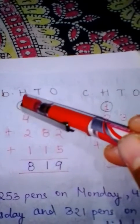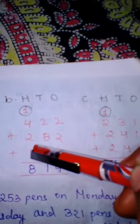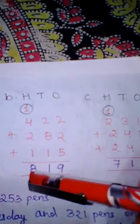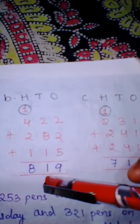Now part B: 422 plus 182 plus 115. So 2 plus 2 is 4, and 4 plus 5 is 9. Write 9. Then 2 plus 8 is 10, and 10 plus 1 is 11, so we write 1 and carry 1 to the hundreds place. Now 4 plus 2 is 6, and 6 plus 1 is 7, and carry 1 makes 8. So our answer is 819.